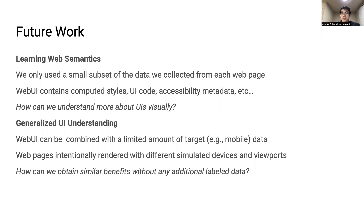Our current work focused on transferring web semantics to the mobile domain, but there's potential to do a lot more. We only used a small subset of the types of data our crawler gathered, and there's room to experiment with other things like computed CSS styles, UI source code, and other kinds of accessibility metadata. We also hope to explore a more generalized type of understanding — instead of making models specifically for one platform, we intentionally rendered web pages with different simulated devices and viewports, which we think could help build models that can handle all of these variations.